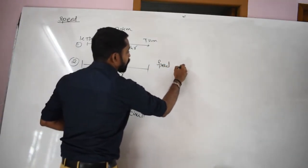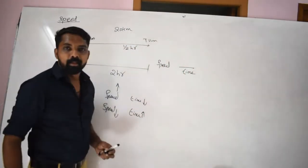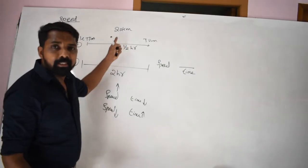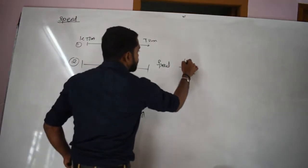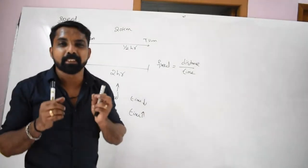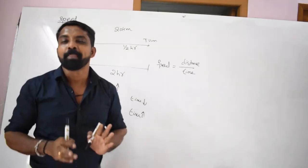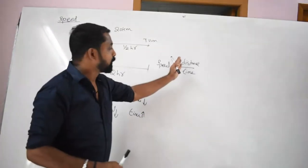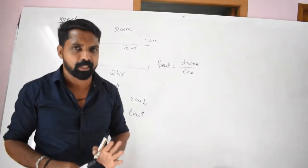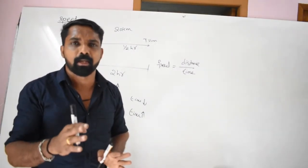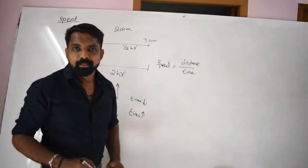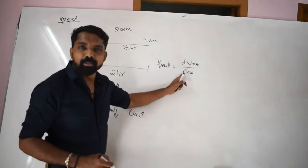Time, inversely, distance. Distance, distance, distance, time, speed — distance divided by time equals speed. Distance, distance, speed. Scale.